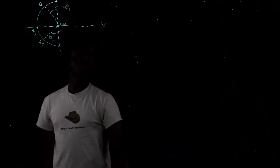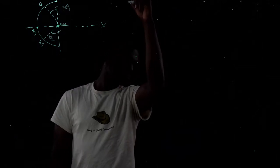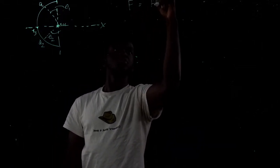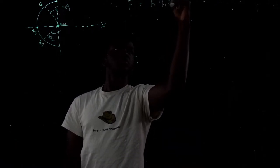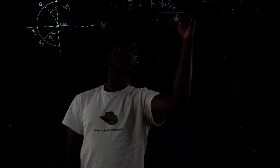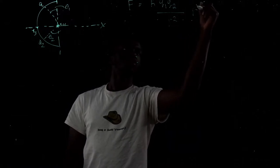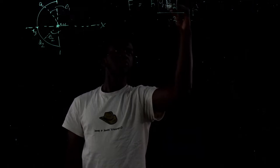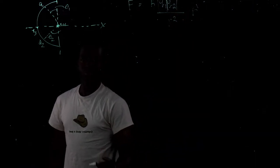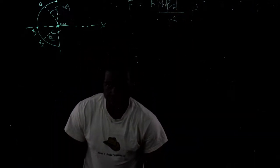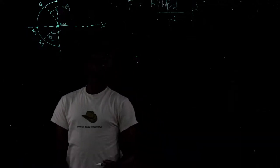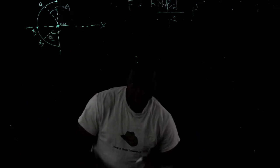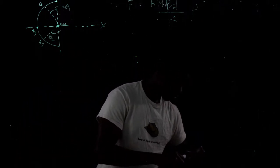The force formula is F equals k times the absolute value of q1 times q2 over r squared, times r-hat. The total force is going to be F1 plus F2 plus F3.